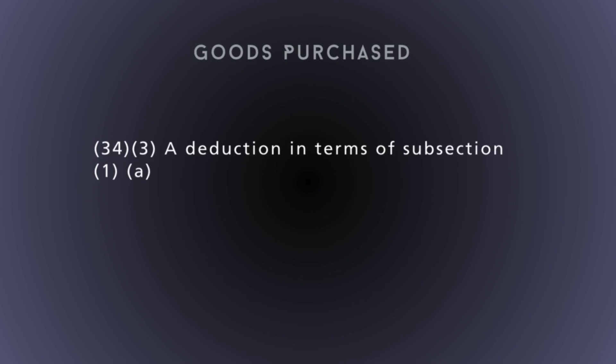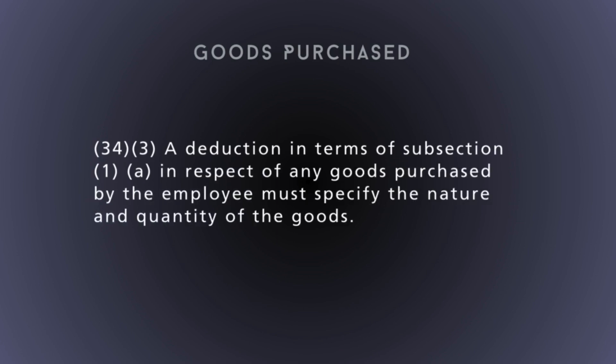That concludes subsection 2. Let's move on to subsection 3. The rest of the deductions section contains additional information or variations for specific types of deductions. We've covered the main points: if you're going to deduct anything from an employee's income, it must fall into one of the two categories — a written agreement to a specified debt subject to subsection 2's four requirements, or a deduction required or permissible in terms of a law, court order, collective agreement, or arbitration award.